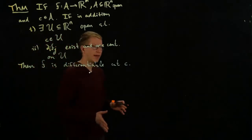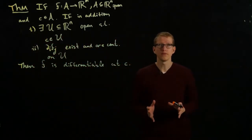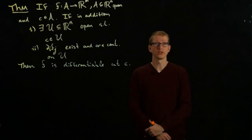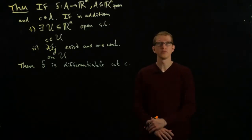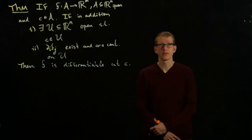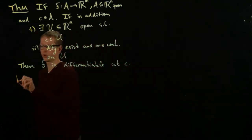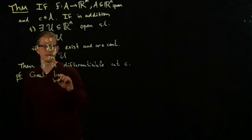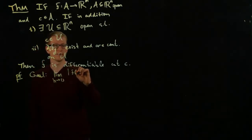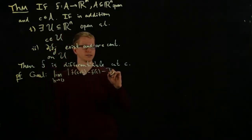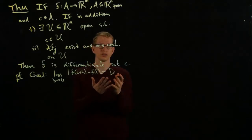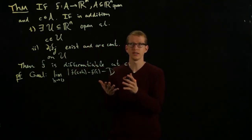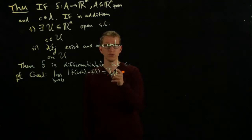For the proof, as we already know, if we want to construct a candidate for the differential we should take its partial derivatives and put them into matrix form. The only remaining thing to prove is to show that the limit as H approaches 0 of F(C+H) minus F(C) minus the differential — our candidate expressed in terms of that matrix — equals zero.